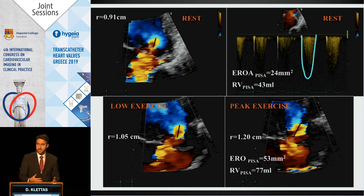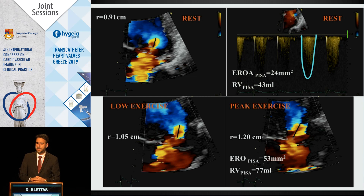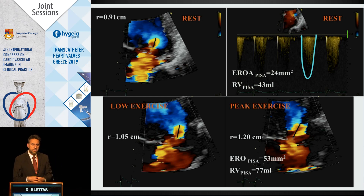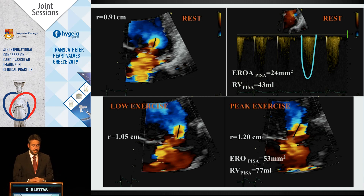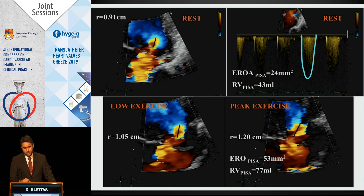We measure PISA at rest and PISA at peak exercise. We are on the safe side when dealing with organic MR, because the PISA hemisphere is more like a real hemisphere, so PISA measurements are more accurate. In contrast, with secondary MR, the semi-elliptical shape of PISA does not always give accurate measurements.